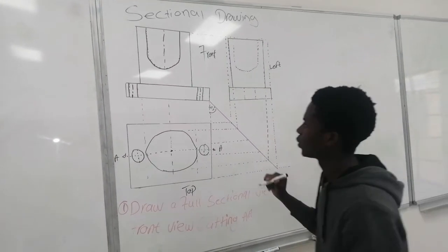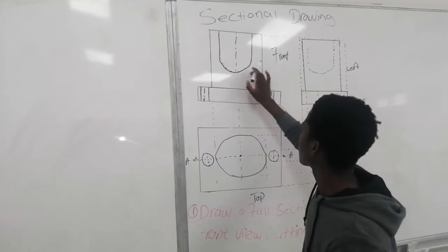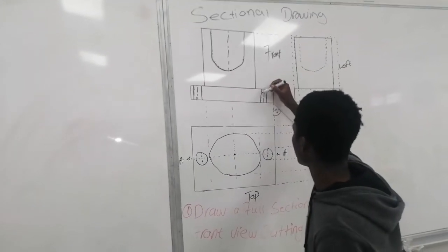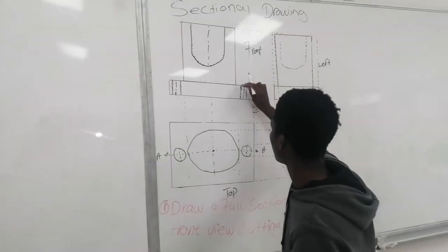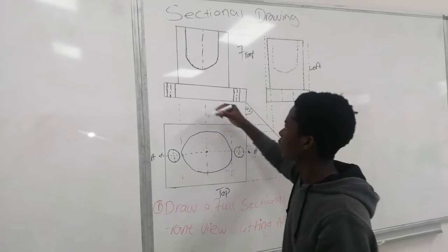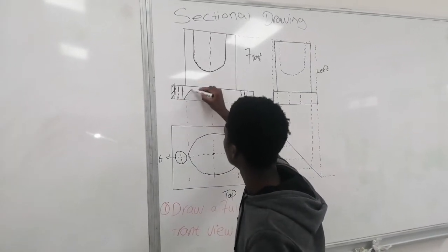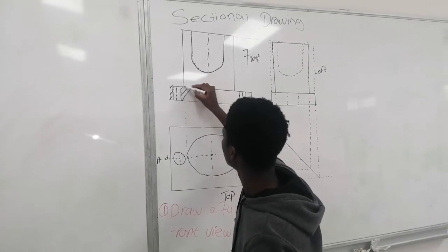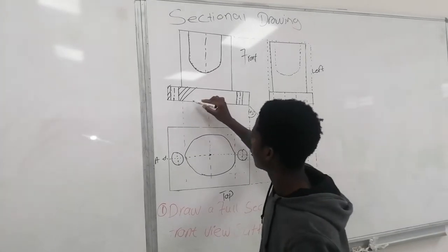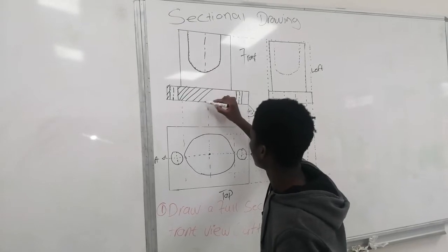Then we go to a section of this thing. We are going to section everywhere except where there is a hole. We are going to section all the parts except those with a hole. So then we are going to section here, and we are going to use a 45-degree set square to draw these lines.